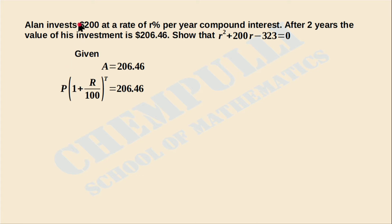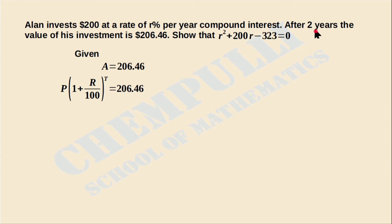Alan invests $200, so P = 200, the starting amount. The rate of interest is R percentage. The time duration T is two years. We can now substitute these values into the formula.